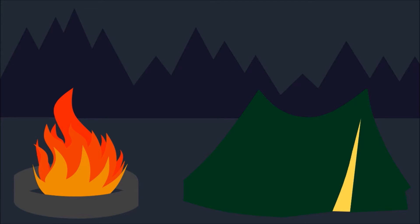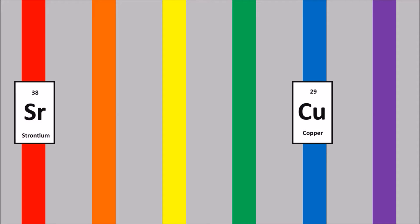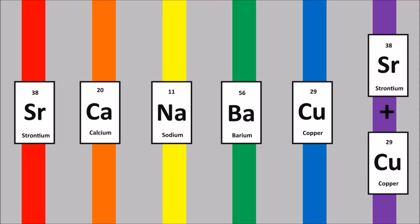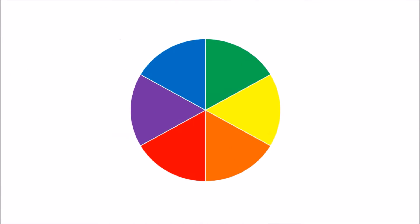Fire is quite an impressive spectacle, especially when implemented in the form of fireworks. But fireworks wouldn't be nearly as impressive without the wide range of colors they come in. We create these colors by burning different materials — copper for blue, strontium for red, sodium for yellow, and so on. The wide range of colors we can produce by burning different materials is impressive,